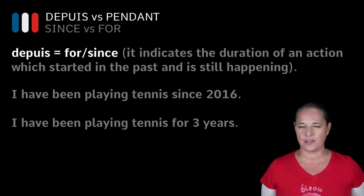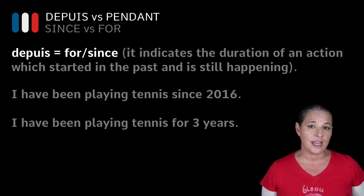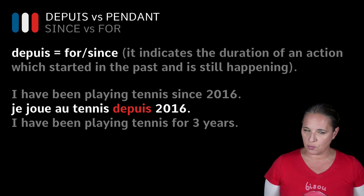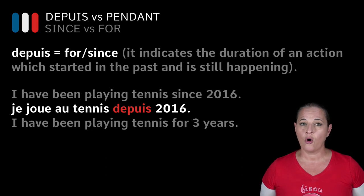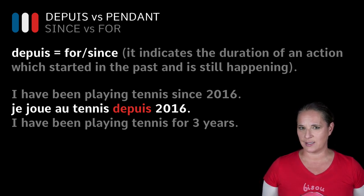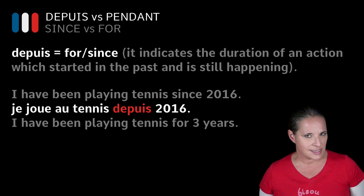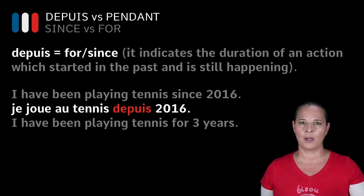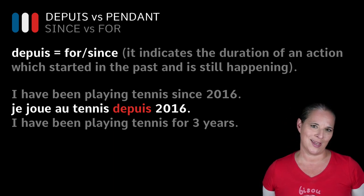So you've been playing since 2016. In French, you must use the present tense to express this idea. You would say 'je joue' — quite simply, 'I play' — 'au tennis,' and then you use the preposition 'depuis,' meaning 'since.' 'Je joue au tennis depuis 2016.' It becomes so much simpler — don't try to translate 'I have been playing,' just translate 'I play' and then add 'depuis' to it.